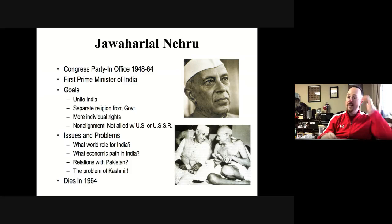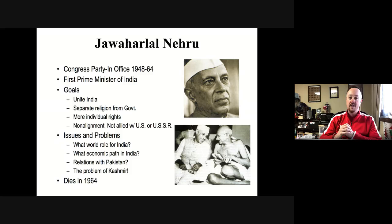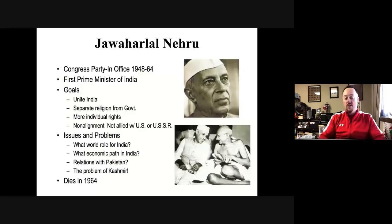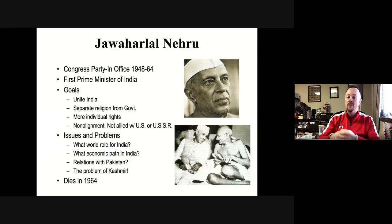Nehru's number one goal was to unite India. He came into a time with a lot of conflict between Muslims, Hindus, and Sikhs. He tried to separate religion from government, though it was deeply ingrained in society and culture, making it very difficult. He also wanted to give more individual rights to people. Regarding the caste system, at the bottom you had the untouchables — people with literally no rights in their society. He worked to outlaw the caste system and bring in more individual rights.